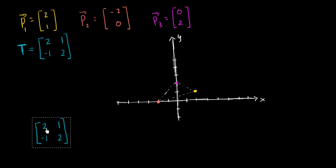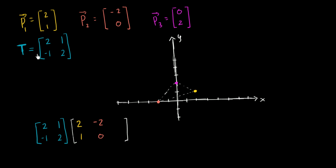I'm going to multiply that by a matrix that has all three of these position vectors in it, where each of the columns is one of these position vectors. So the first column is two comma one, then we have negative two comma zero, and then we have zero comma two. So we're multiplying our transformation matrix by a matrix whose first column is position vector one, second column is position vector two, and third column is position vector three.